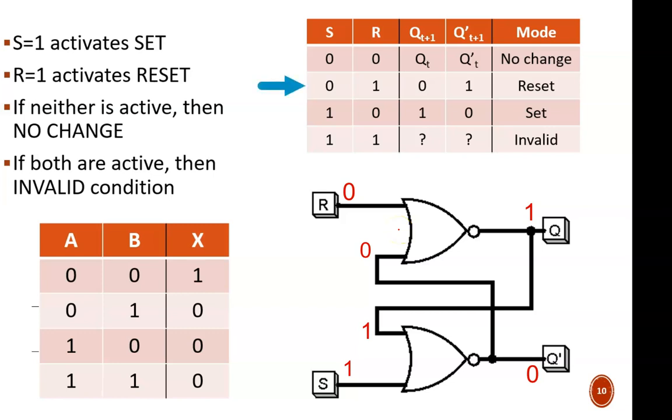Now let's enter reset mode. We expect the outputs to flip. With R equal to one, this top NOR gate has inputs of zero and one. Therefore Q equals zero. As a result, this bottom NOR gate has inputs of zero and zero. Therefore Q' equals one. Looping back, this new Q' value means the top NOR gate now has inputs of one and one. That's no problem. That still leads to an output of Q equals zero.